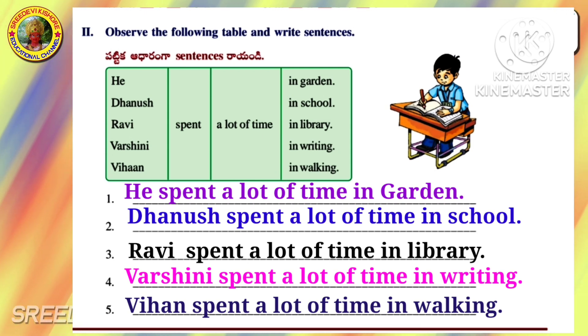Sixth one: Pot, Pots. Seventh one: Week, Weeks. Eighth one: Month, Months. Ninth one: Plant, Plants. Tenth one: Farmer, Farmers.